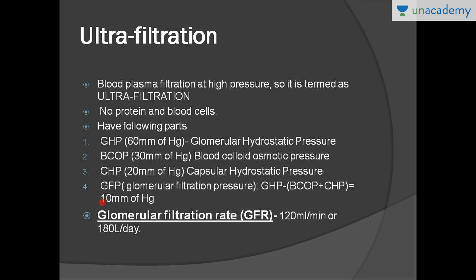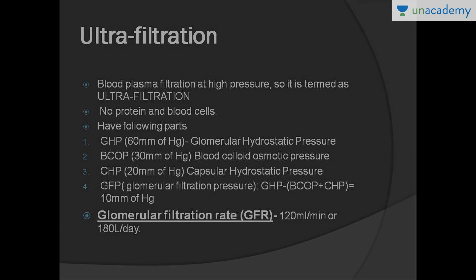The glomerular filtration rate (GFR) is a very important criterion for assessing renal function. The normal GFR is 125 ml per minute, which equals 180 liters per day. Nearly 1000–1200 ml of blood — about one-fifth of total blood volume — is filtered by the kidneys each minute. GFR is the cumulative filtrate quantity from all nephrons in both kidneys.